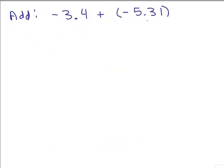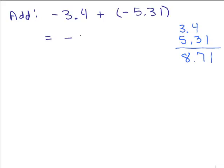Let's add these decimals. Notice they're both negative numbers: negative 3.4 plus negative 5.31. When you add two negatives, you know the answer is going to be negative. Then you add the absolute values of each of those numbers — in other words, take off the negative sign and add. They're both decimals so I need to line up the decimal points. So 3.4 and 5.31 gives me 8.71, so the answer is negative 8.71.